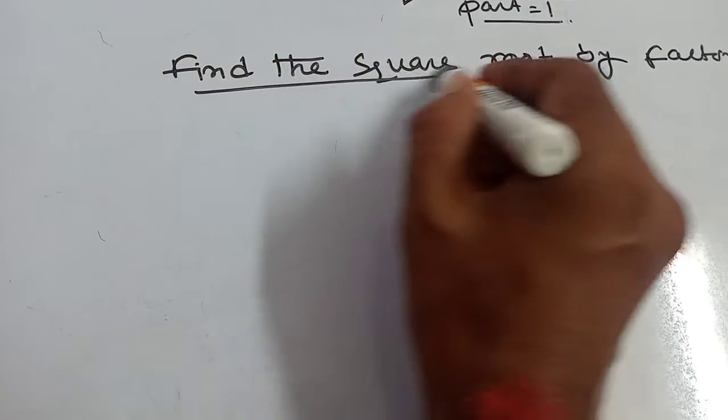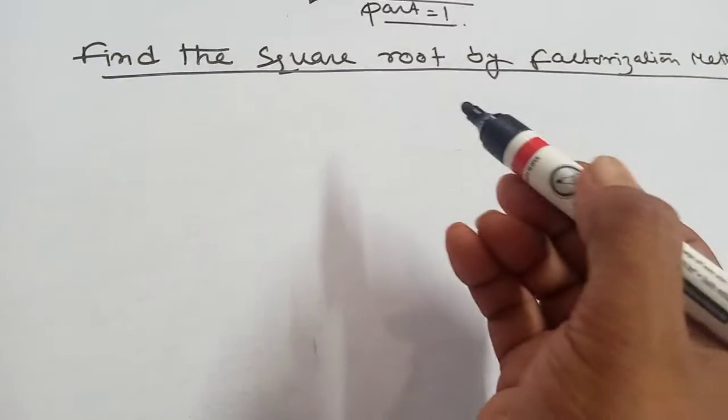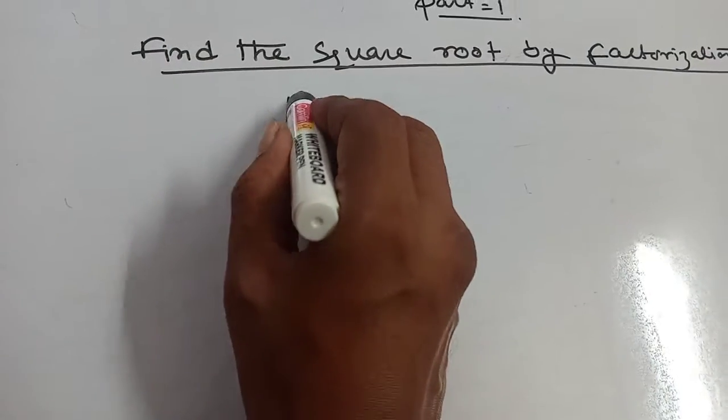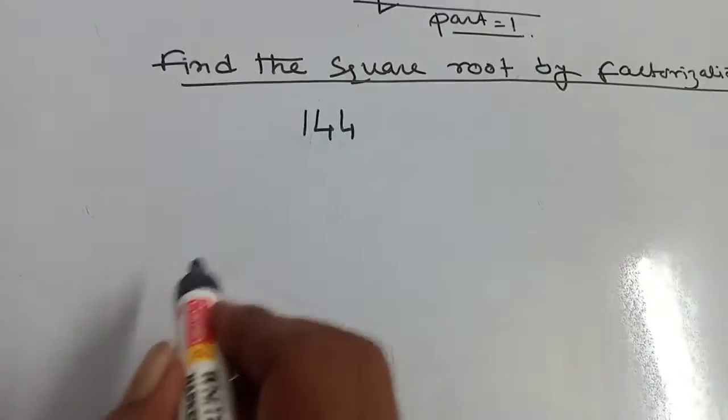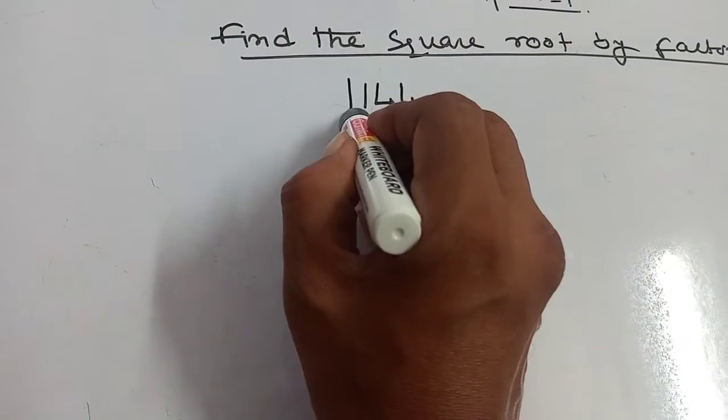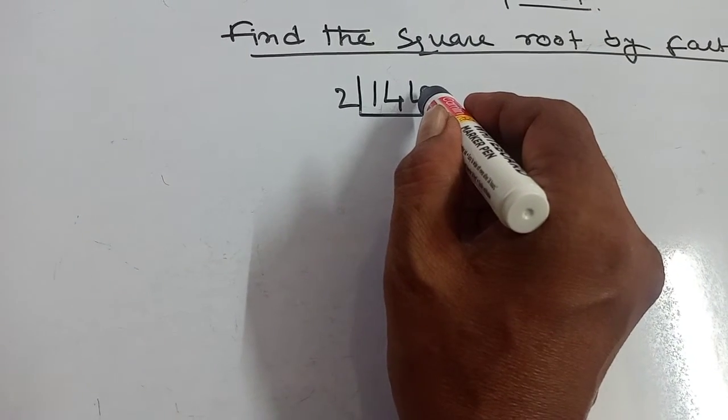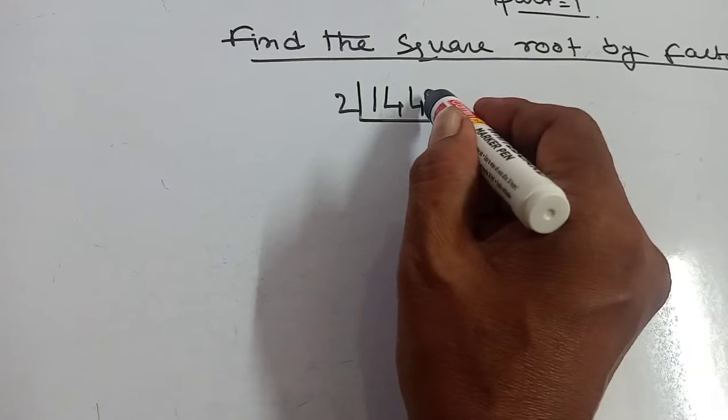Find the square root of like 144. At first you break it into factors. It is going by 2 because the last digit of this number is even.